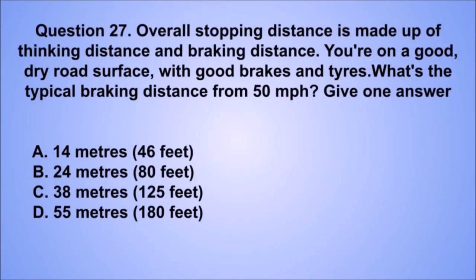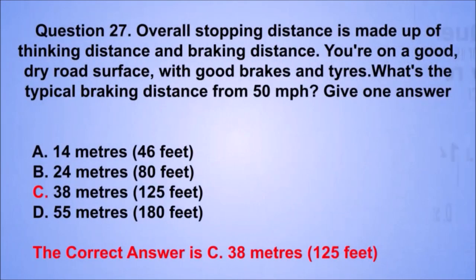Question 27. Overall stopping distance is made up of thinking distance and braking distance. On a good, dry road with good brakes and tires, what's the typical braking distance from 50 miles per hour? The correct answer is C: 38 meters (125 feet).